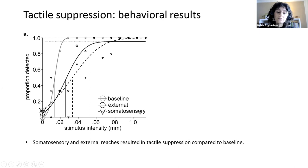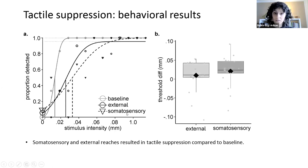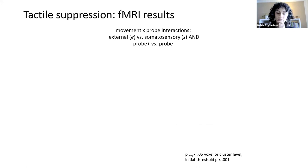We also looked for differences between the different reaching movements in terms of suppression by obtaining a threshold difference. So this we did by subtracting each movement threshold from the baseline condition. And we compared these two. And we saw that there was stronger suppression when participants reached to their own index finger, which is in line with our expectation. Okay, so here are the behavioral results.